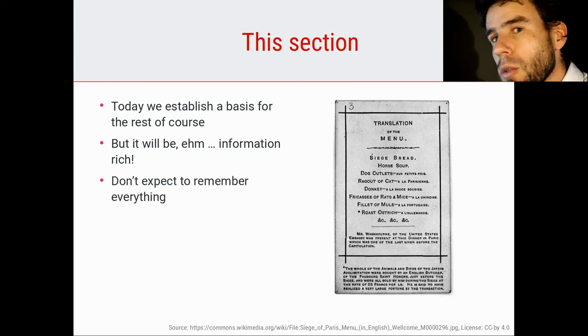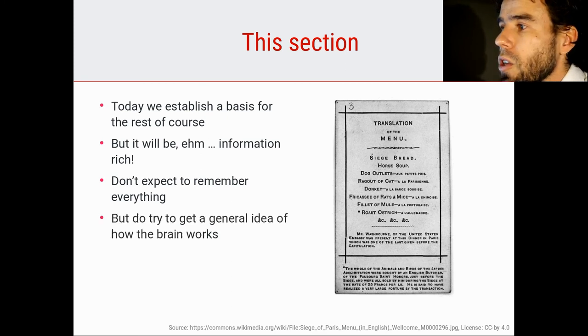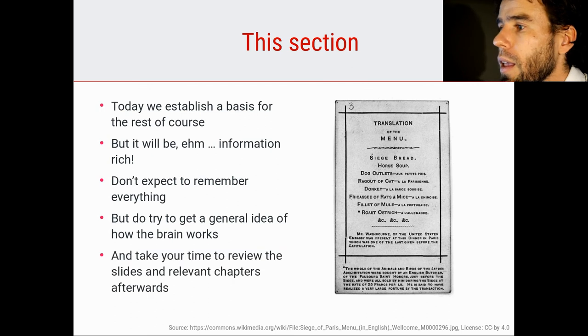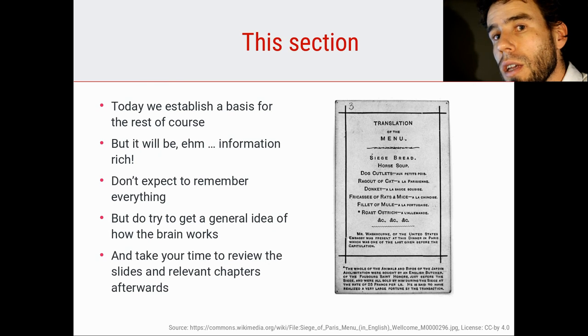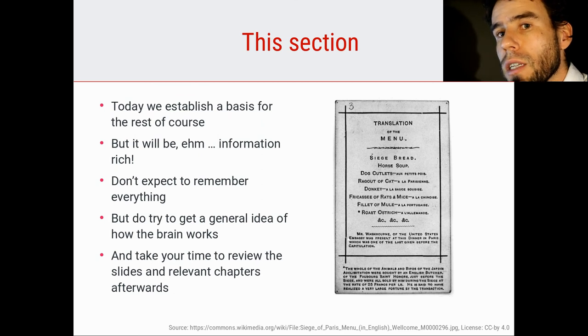Now, don't expect to remember everything in one go, especially if you have no background in chemistry or biology. That's totally okay. The goal is to get a general idea of how the brain works, so to try to understand the general principles of neural communication and the general architecture of the brain. And then if you want to get a more in-depth knowledge of how everything works, you can just take your time to review the slides, right, or review this video and to read the relevant chapters in the OpenStax textbooks until you gradually incorporate all the information that is in here.